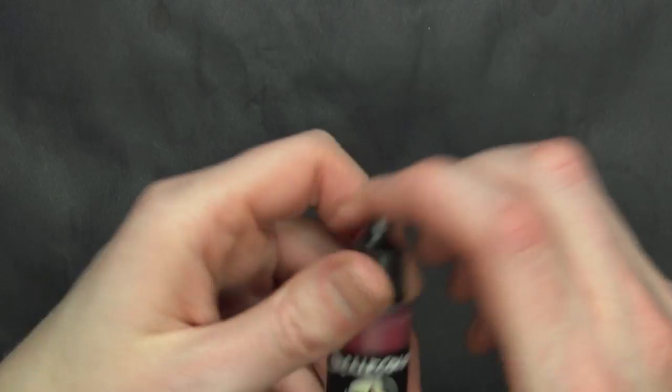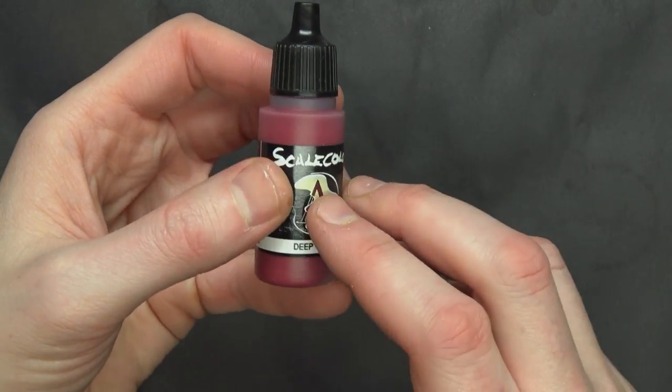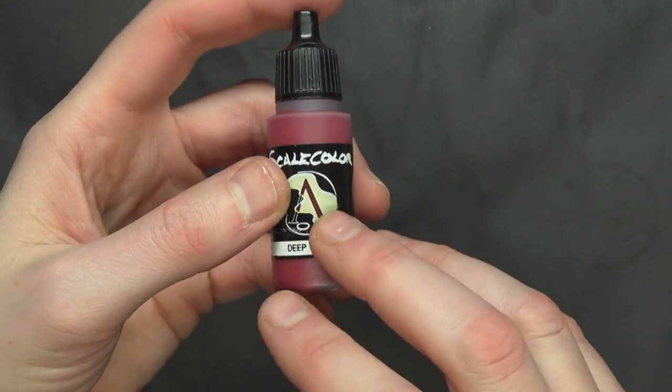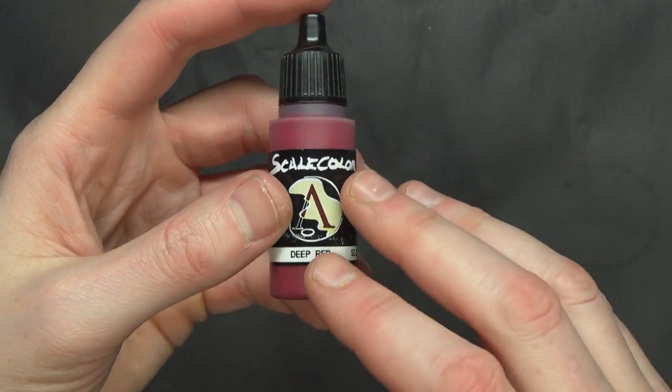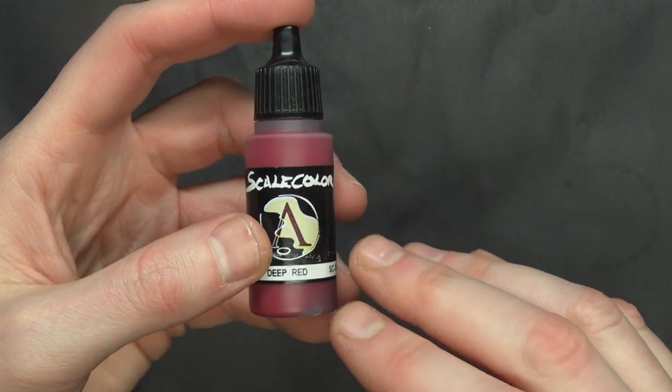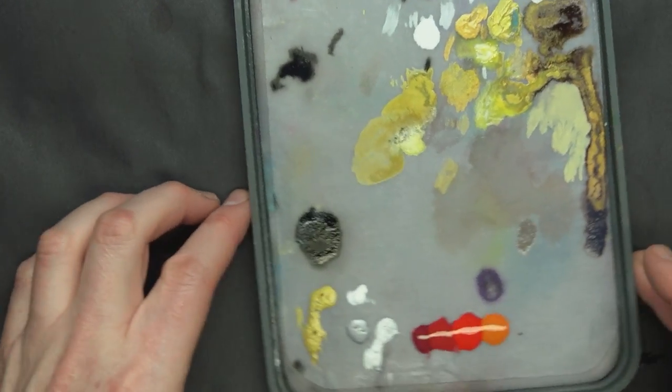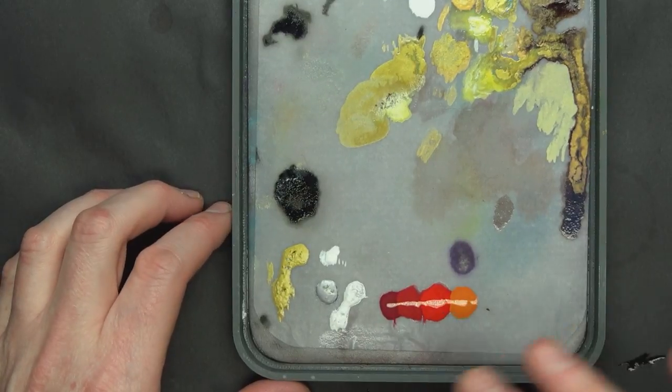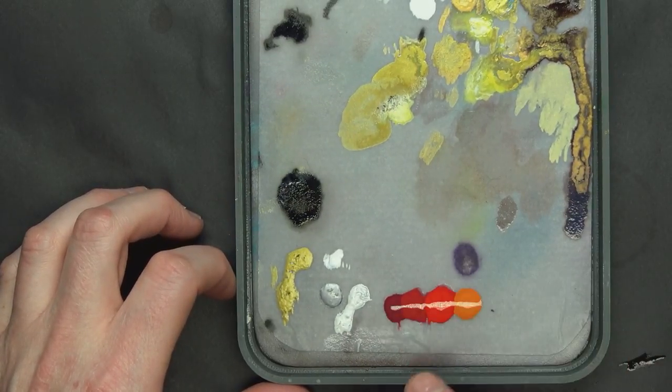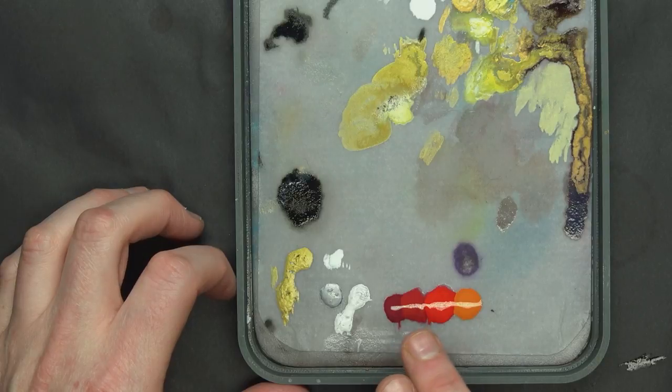The first color we're using is Scale 75 Deep Red. With all the Scale 75s you can't really judge from what they look like outside the bottle because this looks like a purple red. But if I look over in my Everlasting Water palette here, you can see it's not a true purple red. Don't always judge by the bottles - you need to get in here and get your hobby on to figure out how they work.